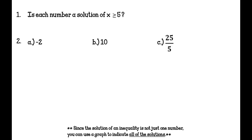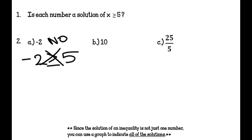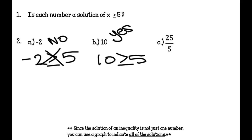The first type of problem asks: is each number a solution of x is greater than or equal to 5? Plug in negative 2 — is negative 2 greater than or equal to 5? No, so it's not a solution. Is 10 greater than or equal to 5? Yes, so it is a solution. 25 divided by 5 is 5 — is 5 greater than or equal to 5? Yes, it's equal to 5, so it is a solution.